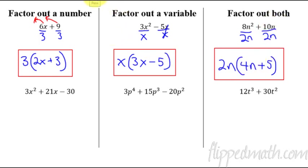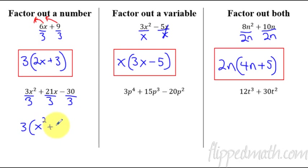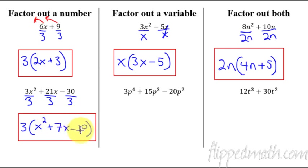Now with three terms: look at all three carefully. A common mistake is to see x² and try to factor out x, but every single term must have an x. If one term doesn't have an x, you can't factor it out. Here, a 3 goes into all the coefficients. So we factor out 3, giving us 3(x² + 7x − 10). Check by distributing the 3 back to verify you get the original expression.